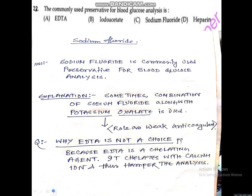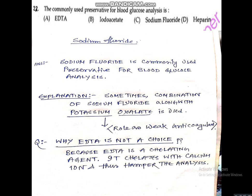In question number 22, they ask: the commonly used preservative for blood glucose analysis is EDTA, iodoacetate, sodium fluoride, or heparin? The answer is option C — sodium fluoride. Sometimes a combination of sodium fluoride along with potassium oxalate is used; potassium oxalate acts as a weak anticoagulant. EDTA is not used because it is a chelating agent that chelates with calcium ions, hampering the analysis.